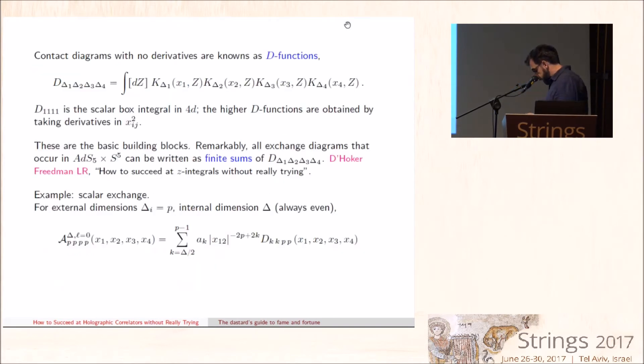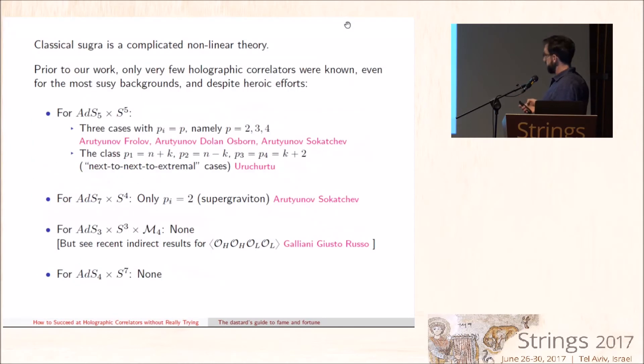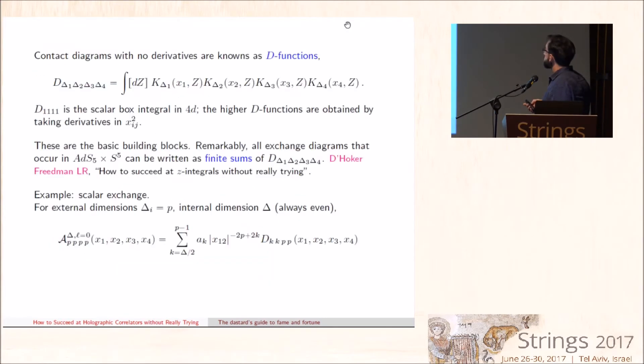The vertices are obtained by painful and really difficult non-linear Kaluza-Klein reduction of IIB supergravity on the five sphere. The calculation of the diagrams themselves takes a bit of work, but it was streamlined in a series of early papers in which I was involved. The basic building block is this so-called D-function, which is defined for external dimensions δ₁, δ₂, δ₃, δ₄. It depends on the four external points. By conformal invariance, it can be reduced to a function of the two cross ratios, and the point Z in the bulk of AdS is integrated over. These are relatively straightforward special functions.